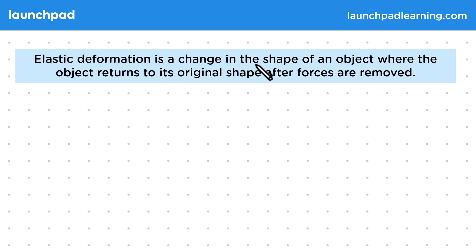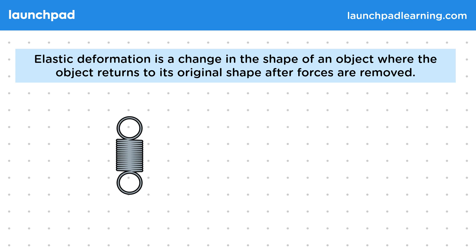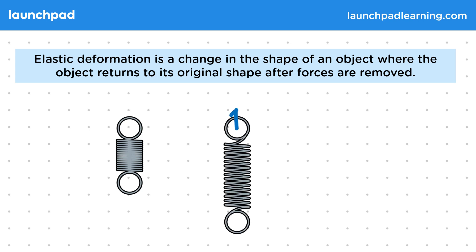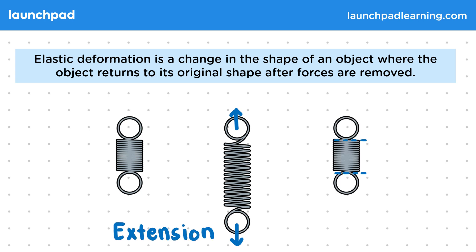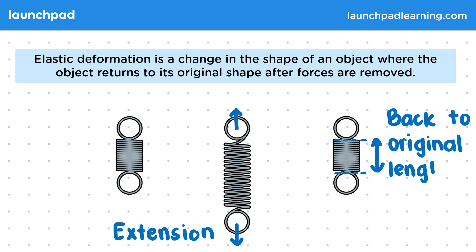Elastic deformation is a change in the shape of an object where the object returns to its original shape after forces are removed. Remember that deformations are the result of two or more forces causing the change in shape of an object. For example, stretching a spring. To stretch a spring, the forces must be in opposite directions and the spring can then extend. When the spring is released, it returns back. This is an elastic deformation as it returns back to its original shape and length.